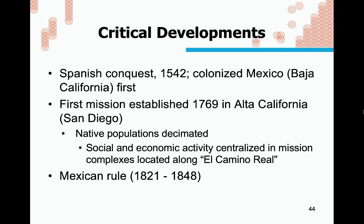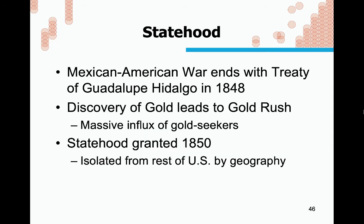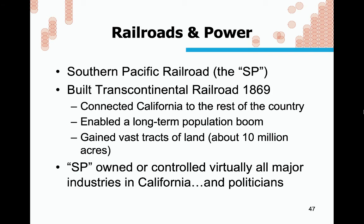Mexico gained independence from Spain in 1821, and what would become California was part of Mexico until 1848. The Mexican-American War ended in 1848 — President James K. Polk lined up troops along the border, instigating an attack from Mexican forces, which then justified the U.S. invasion of Mexican territory in 1846. The war lasted two years. The discovery of gold shortly thereafter led to the Gold Rush and massive migration, and statehood was granted to California by 1850.